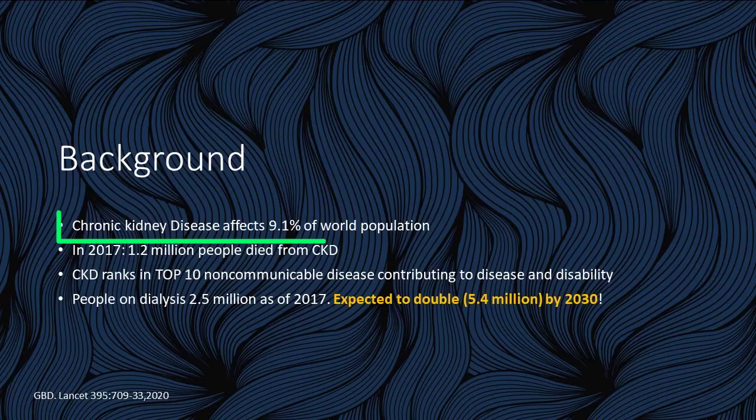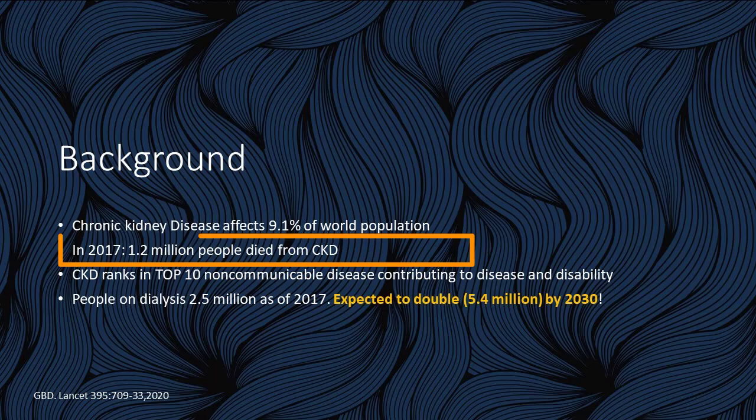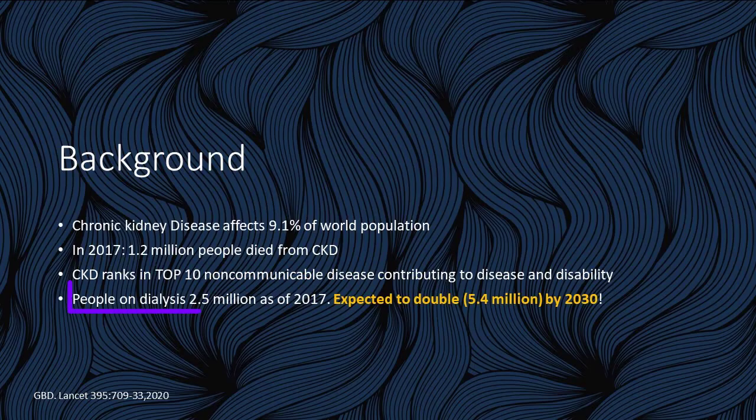Before we dive into all of the interesting and exciting data, the first question really is you have to understand how big of an impact kidney disease really makes across the world. Kidney disease affects 9.1% of the population. In fact, if you looked at the data from 2017, 1.2 million people died from chronic kidney disease. As of 2017, two and a half million people were already on dialysis.